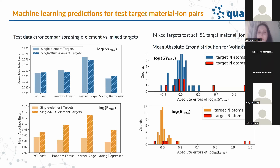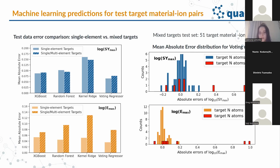Looking at the distribution of mean absolute errors on the test data for the voting models, the test data included 51 unique target material-ion pairs, with eight instances where target materials were composed of more than one element. The errors for multi-elemental targets were, for most cases, consistent with errors found for single-element targets, and were only overestimated in two instances. The same was observed for incident ion energy — errors for multi-elemental targets were mostly consistent with errors for single-element targets.